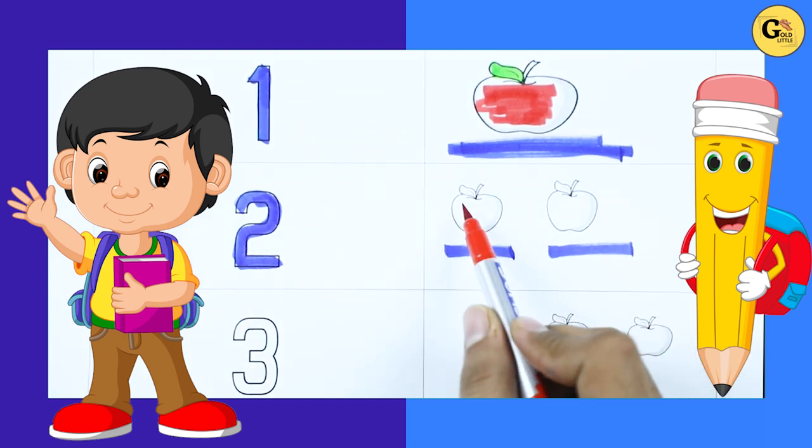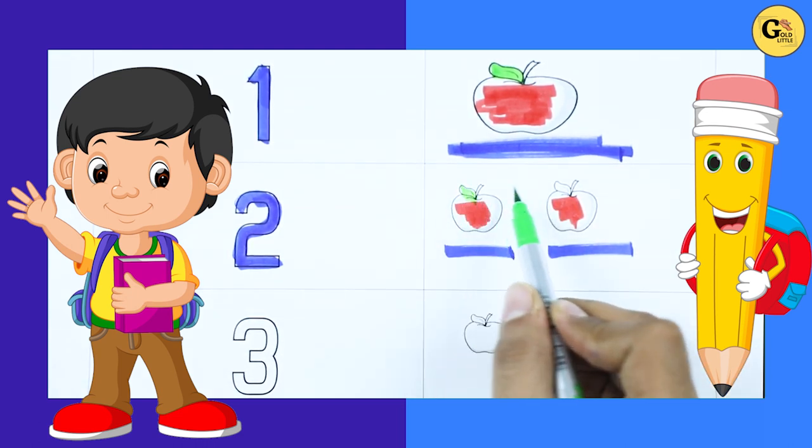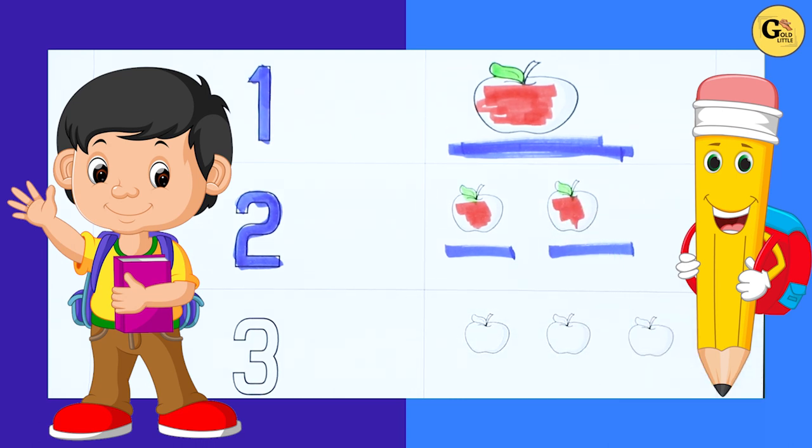Red color. 1 apple, 1 leaf, 2 leaves. It's apple.